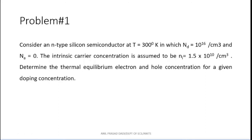Reading also you have a problem — very unfortunate. Are you students or not? Only roll number 8 is responding all the time. From next time onwards I can teach only to roll number 8; all others can sit at home. Roll number 31, read the question. Silicon semiconductor at T equals 300 degrees Kelvin in which Nd equals 10 to the power 16 per centimeter cube and Na equals zero. The intrinsic carrier concentration is assumed to be ni equals 1.5 into 10 to the power 10 per centimeter cube. Determine the thermal equilibrium electron and hole concentration for the given doping concentration.